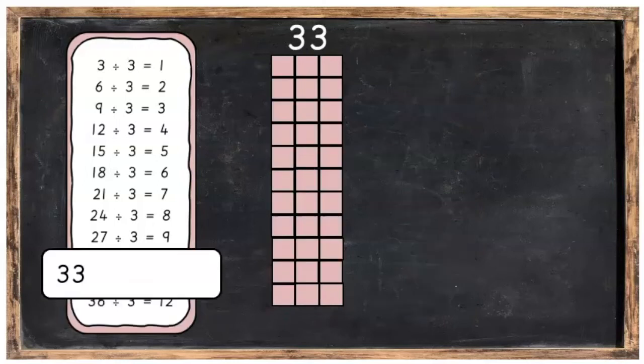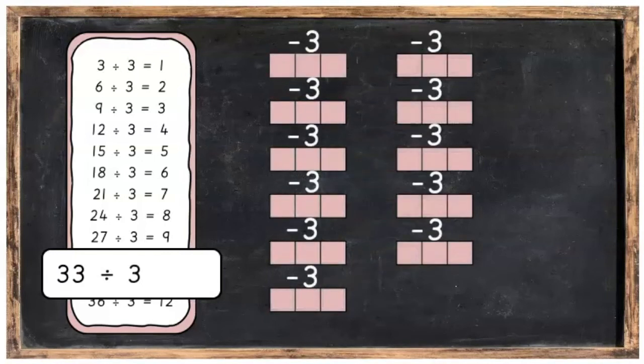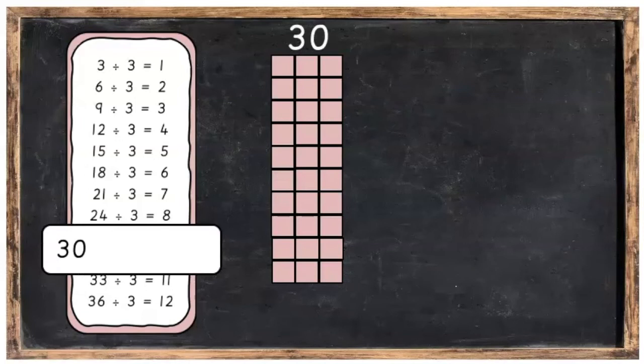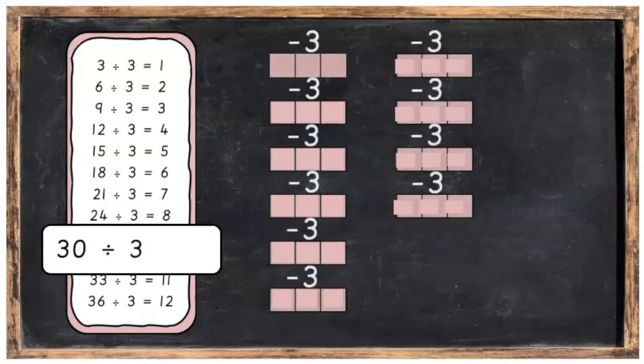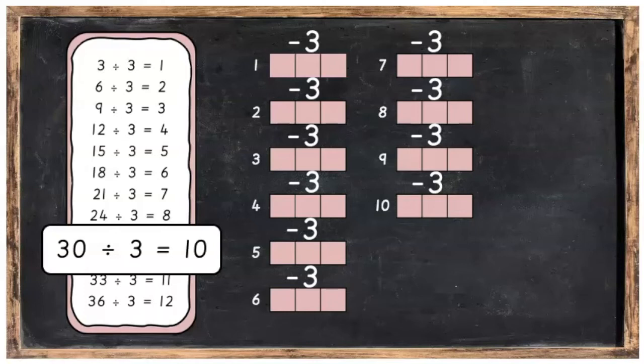Let's go on to 33 now. If we start with 33, we can take away 3, 11 times. If we've got 30, we can take away 3, 10 times. There's 10 groups of 3 there.